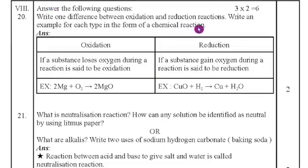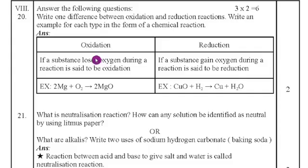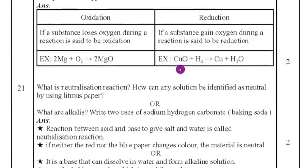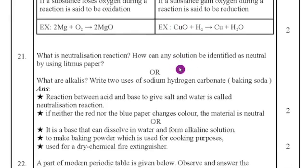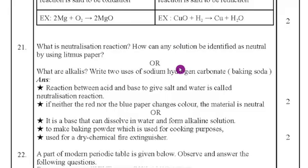Eighth main: answer the following question. Twentieth question: write one difference between oxidation and reduction reactions and give an example of each as a chemical reaction. Oxidation means a substance loses electrons or gains oxygen during the reaction — an example is given. Reduction means a substance gains oxygen during the reaction — an example is also given. You can give any appropriate example related to oxidation and reduction.